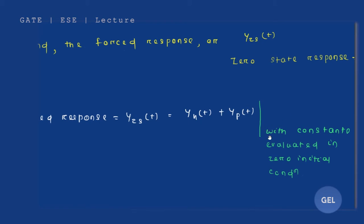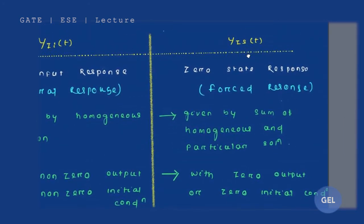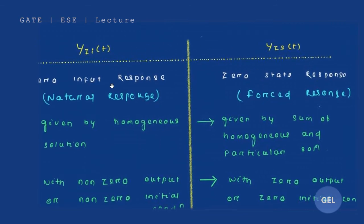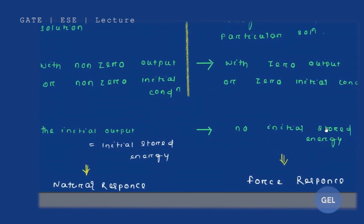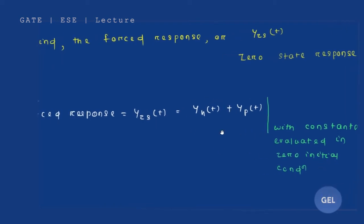We'll add these two solutions with constants which will be evaluated at the zero initial condition. The key difference between forced response and natural response is that forced response doesn't have any initial stored energy, no initial output, and no initial condition. In forced response we have zero initial condition, so the constants in the homogeneous and particular solution will be evaluated with zero initial condition.